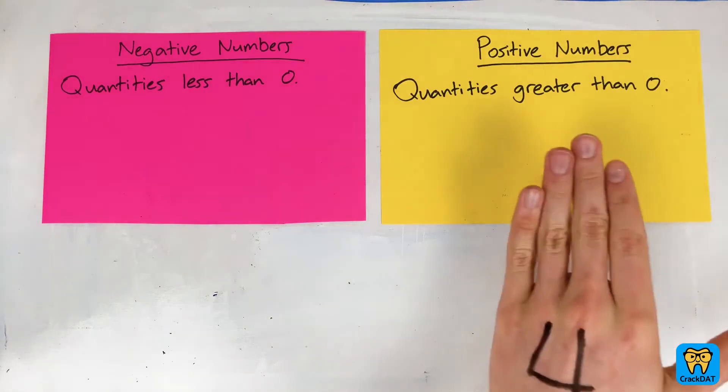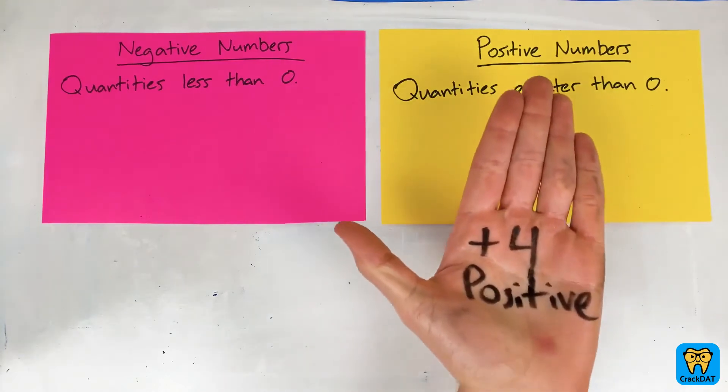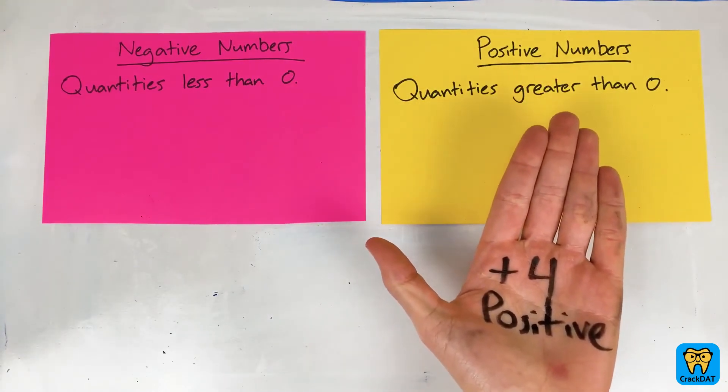So for example, on the one hand we have the number 4. 4 is greater than 0, so 4 is positive. We could also write plus 4, where the plus indicates positive.